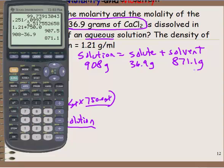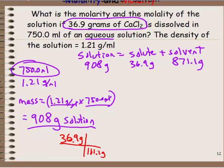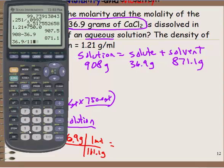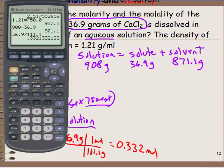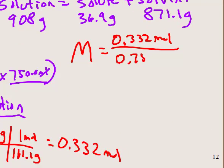Now we have grams of solution, solute, and solvent, plus the volume of the solution. Converting 36.9 grams of CaCl₂ to moles using the molar mass of 111.1 grams per mole: 36.9 divided by 111.1 gives 0.332 moles. For molarity, that's 0.332 moles divided by 0.7500 liters of solution.